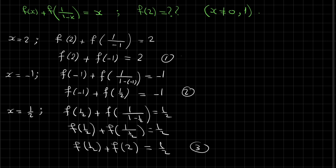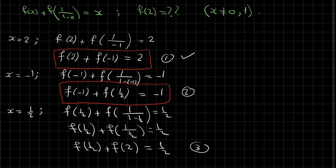So we have three equations: equation 1: f(2) + f(-1) = 2; equation 2: f(-1) + f(1/2) = -1; and equation 3 in terms of f(1/2) and f(2): f(1/2) + f(2) = 1/2.